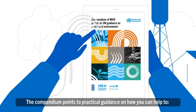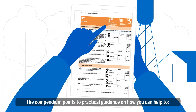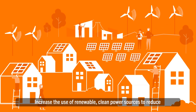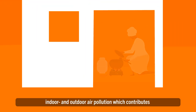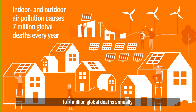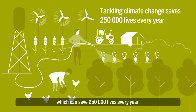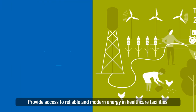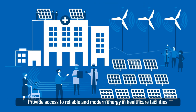The Compendium points to practical guidance on how you can help to increase the use of renewable clean power sources to reduce indoor and outdoor air pollution, which contributes to 7 million global deaths annually. It also helps to mitigate and adapt to the effects of climate change, which can save 250,000 lives every year.